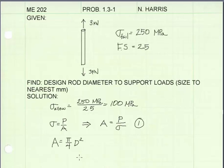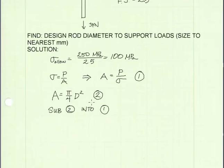Next, I've written the equation for the cross-sectional area of a circle. It's equal to pi over 4 times the diameter squared. I'm going to call that equation 2. Now I'm going to substitute equation 2 into equation 1 and solve for the diameter.